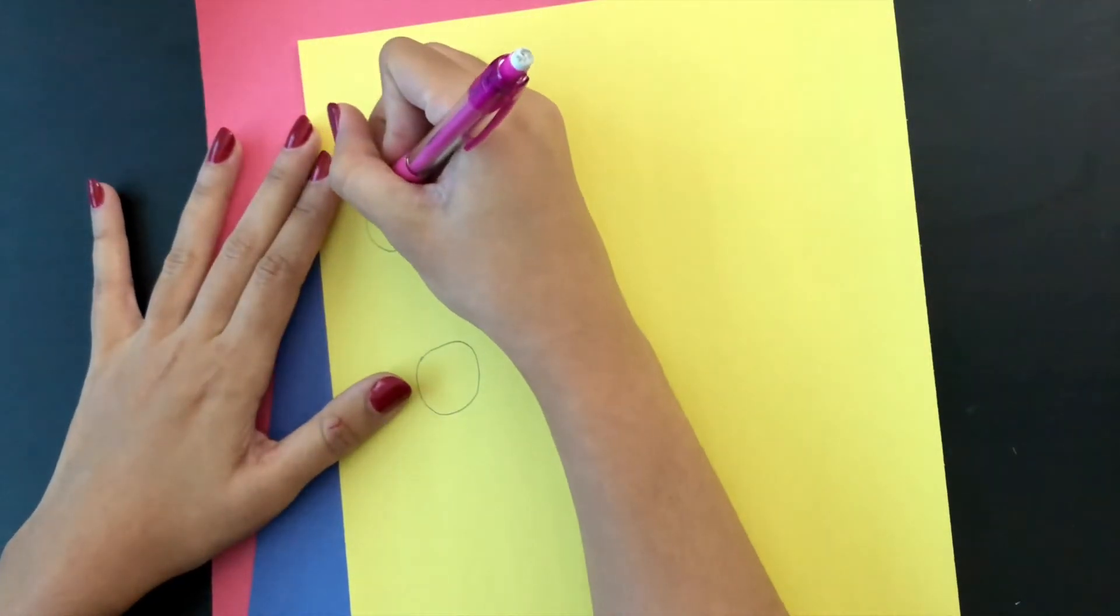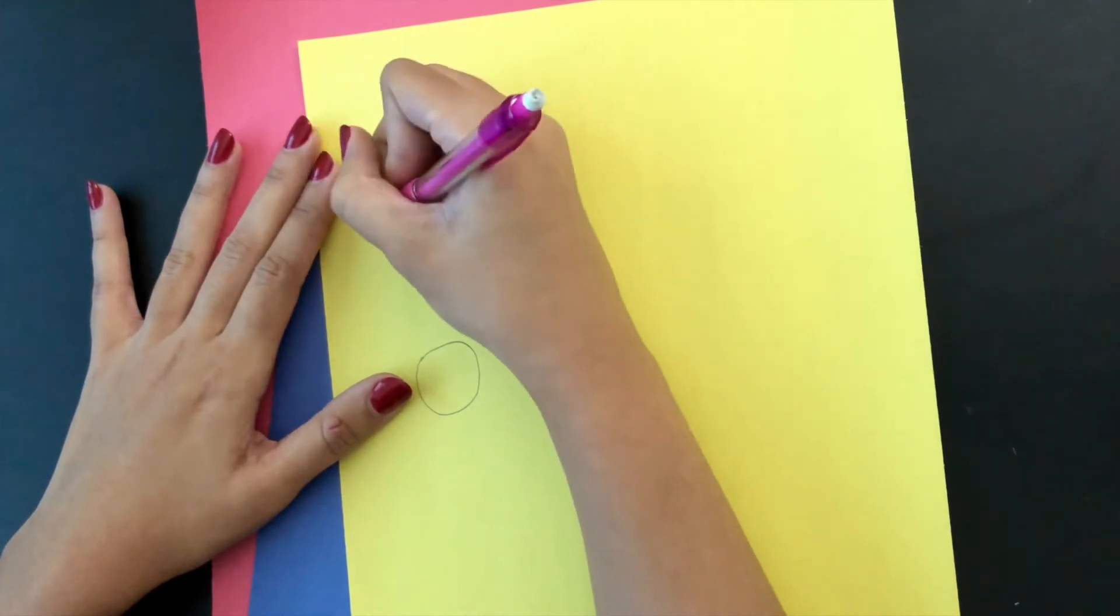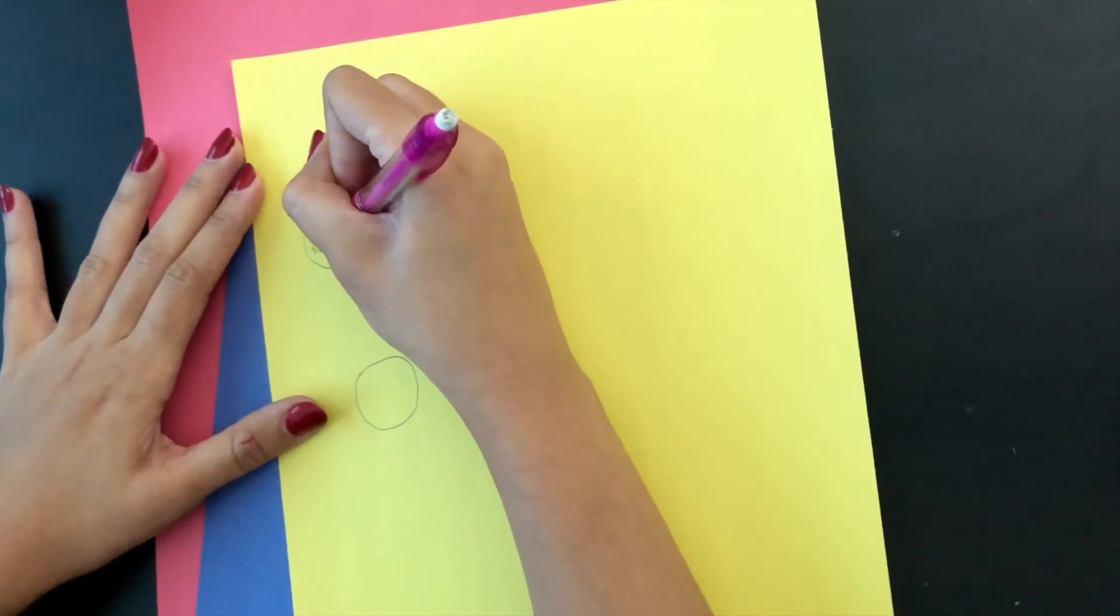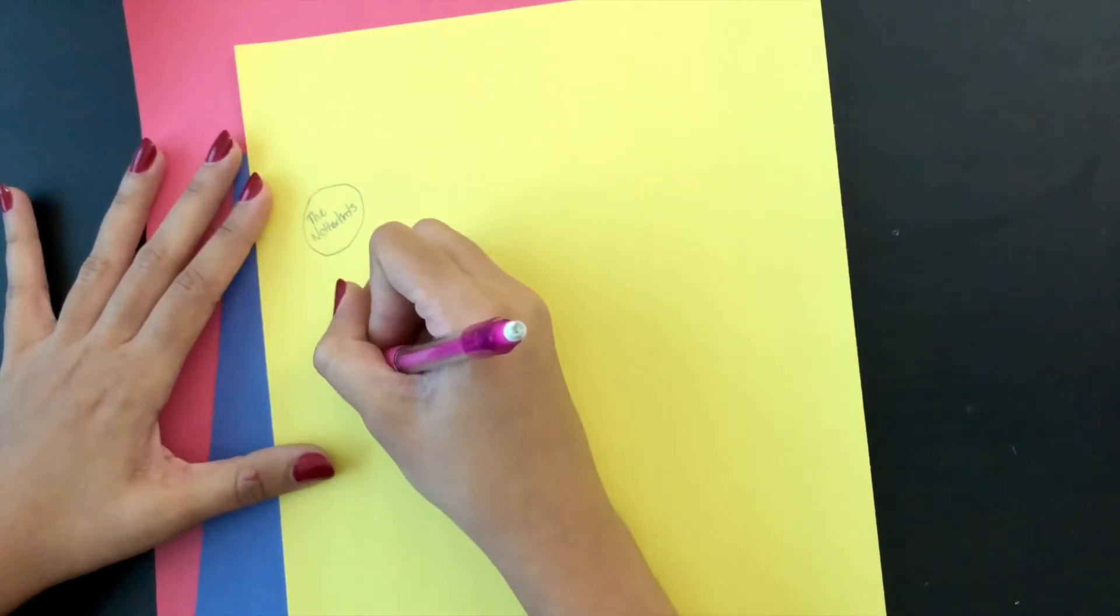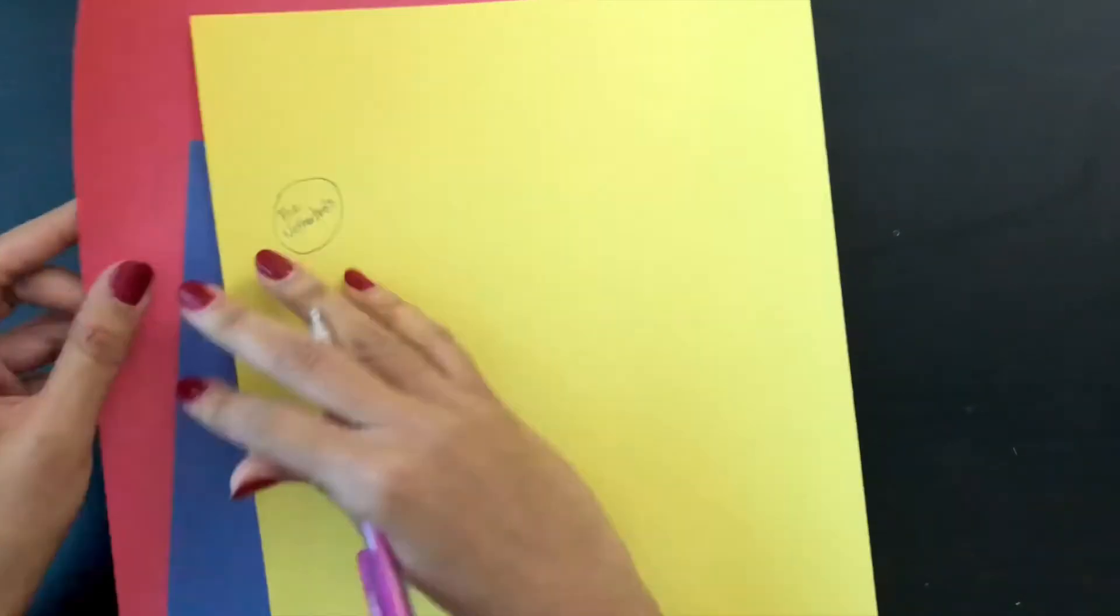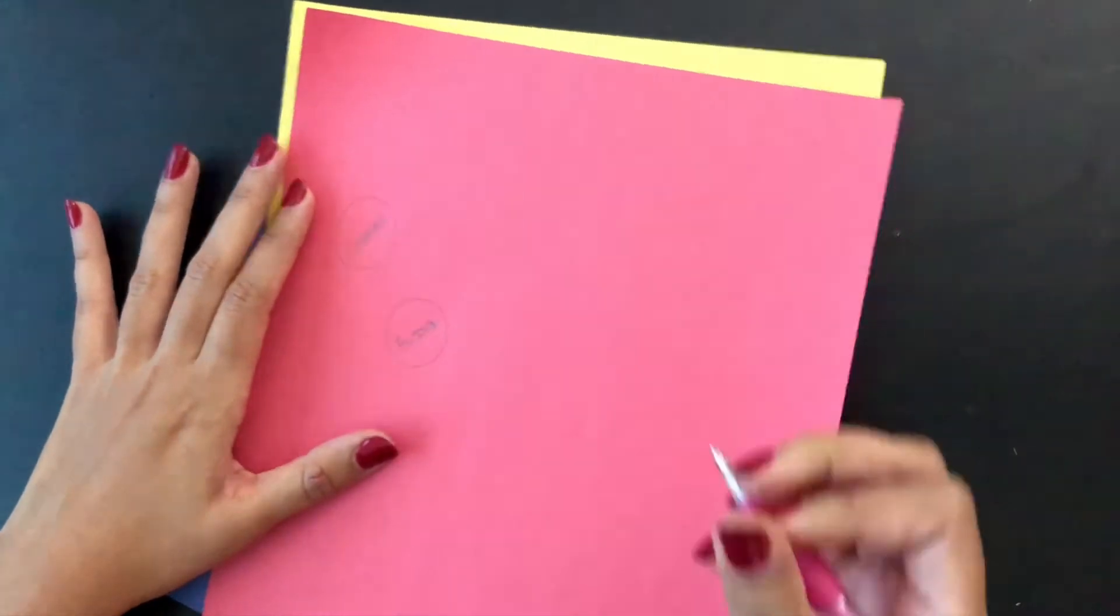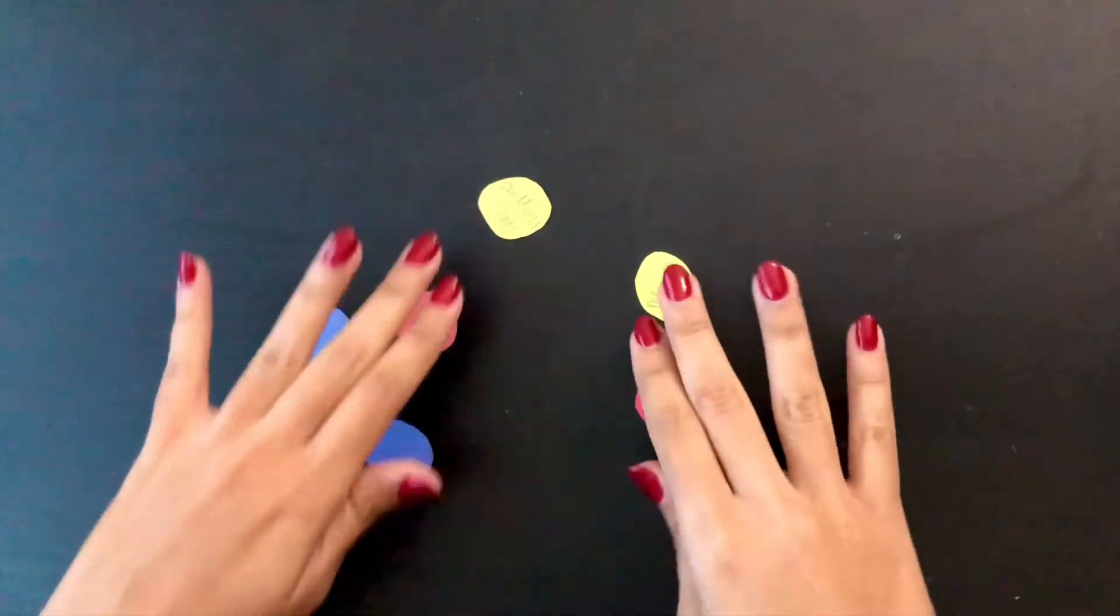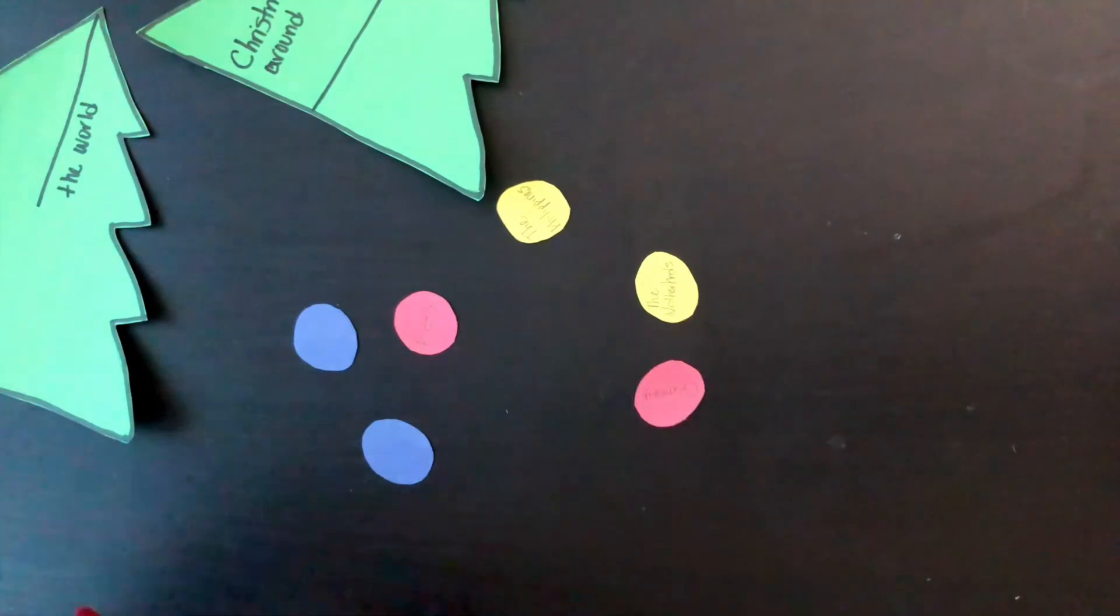Now that we have the circles, let's write the names of the countries. The countries are the Netherlands, the Philippines, Germany and Russia. When you're done with your circles, just cut them out. And now, we're going to stick them on our trees.